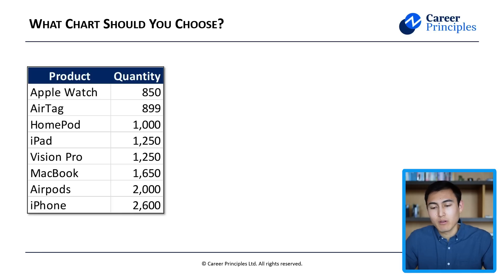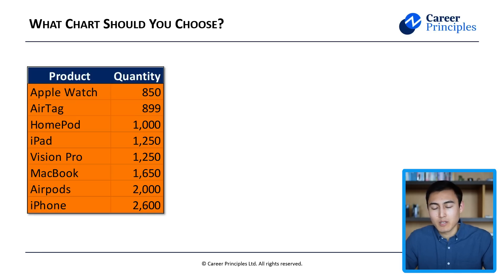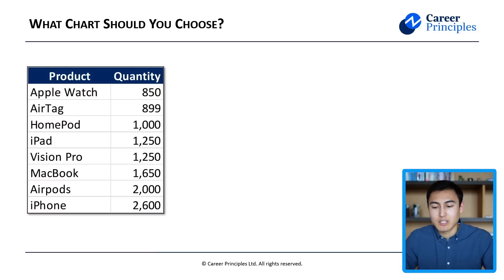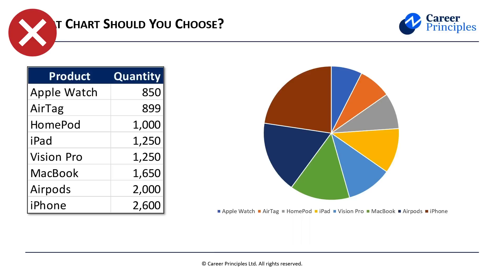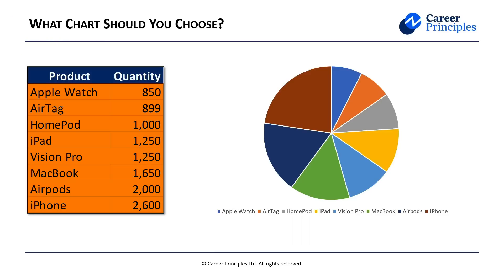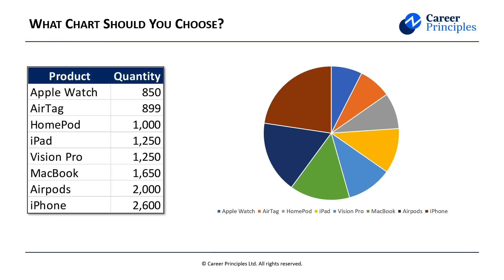To test ourselves, let's look at some data in this table. We have some Apple products and their quantities. We want to see what chart showcases this data best — feel free to pause and give it a try. A common pick here would be a pie chart, but in my opinion, this isn't the best choice, in part because we have one too many categories. Ideally you want around five or fewer, so this is a few too many.